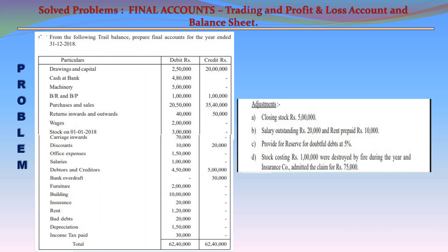Purchases: 20,50,000. Sales: 35,40,000. Return inwards: 40,000. Return outwards: 50,000. Wages: 2,00,000. Stock on 1 January 2018: 3,00,000. Carriage inwards: 70,000. Discounts: 10,000. Discounts received: 20,000.